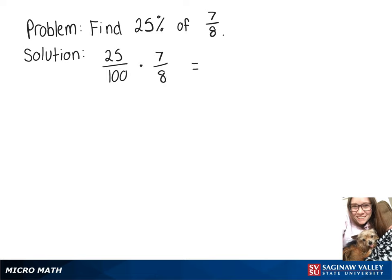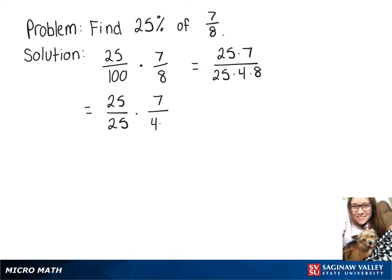On top we'll have 25 times 7, and on the bottom we'll have 100 times 8. I'm going to rewrite that 100 as 25 times 4, and then times 8, because now we can separate that into 25 over 25 times 7 over 4 times 8. 25 over 25 goes away, and we're left with 7 over 4 times 8, which is 32.